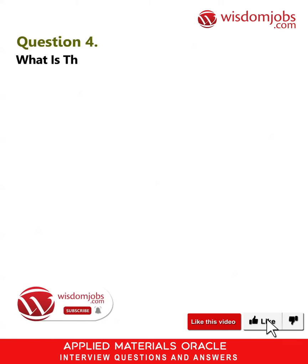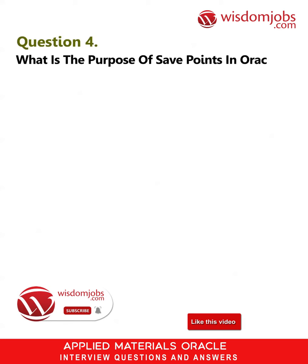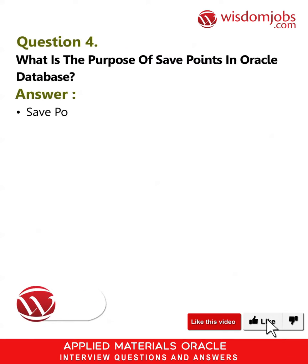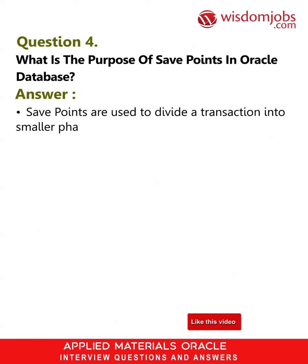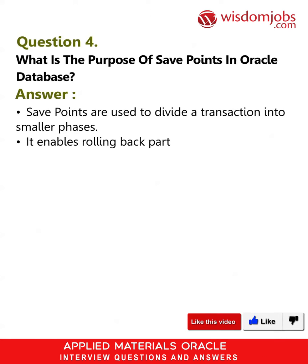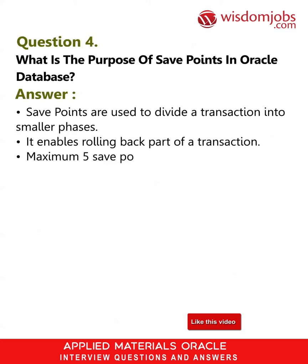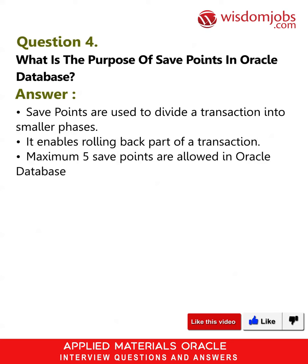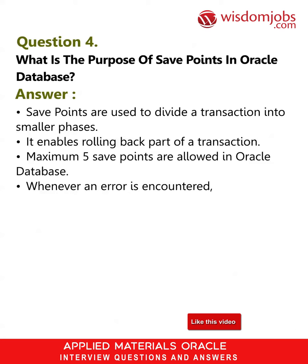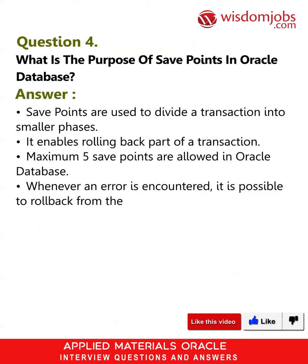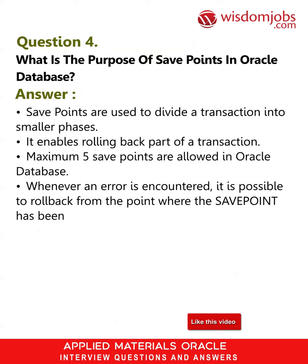Question 4: What is the purpose of save points in Oracle database? Answer: Save points are used to divide a transaction into smaller phases. They enable rolling back part of a transaction. A maximum of 5 save points are allowed in Oracle database. Whenever an error is encountered, it is possible to roll back from the point where the save point was saved.